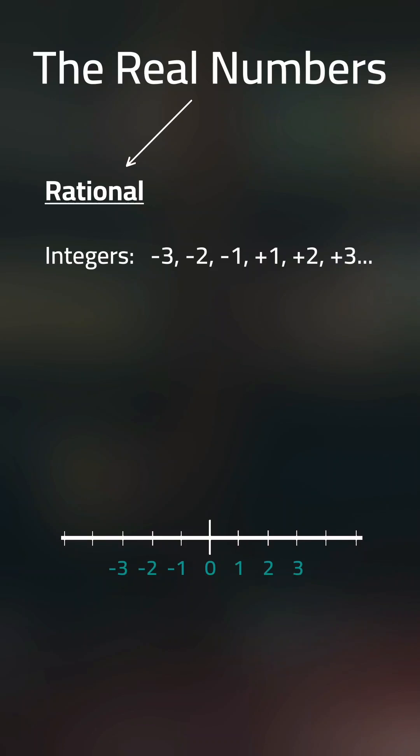Rational numbers include integers as well as fractions that can be expressed as a ratio of two integers, although the denominator cannot be zero. As decimals, rational numbers either terminate or repeat themselves,